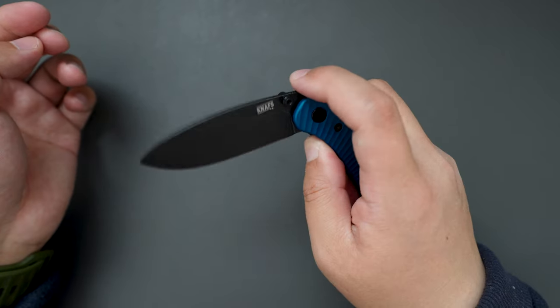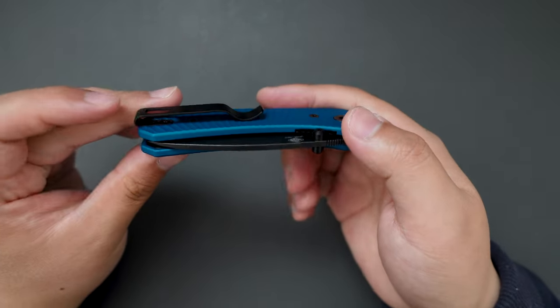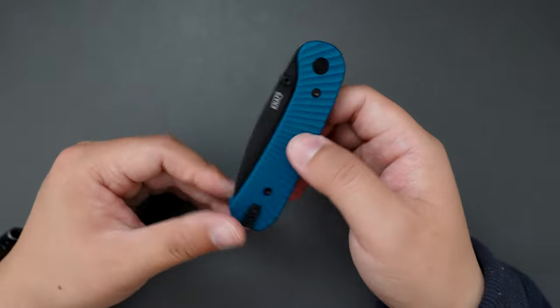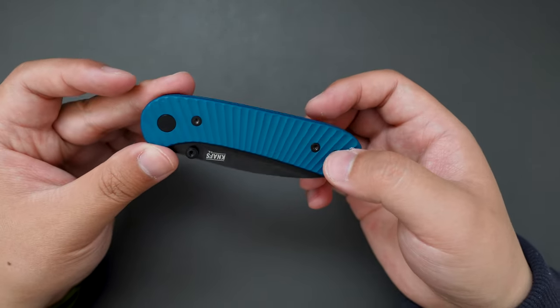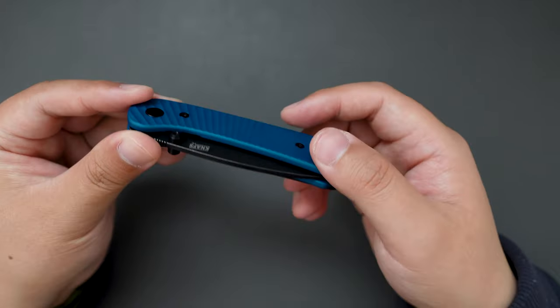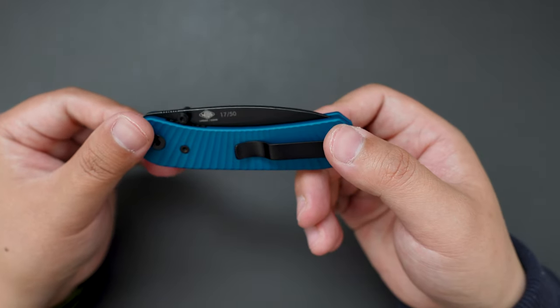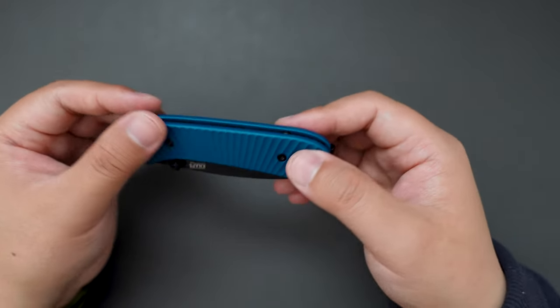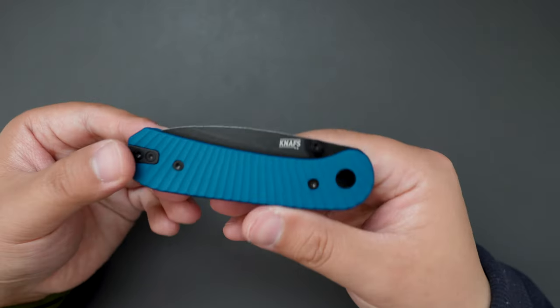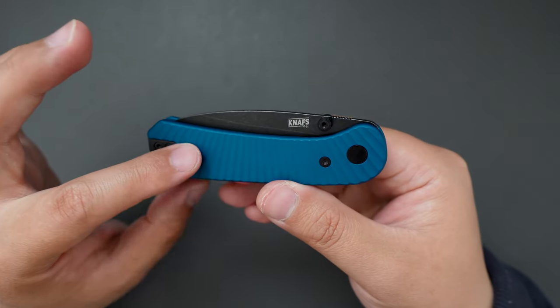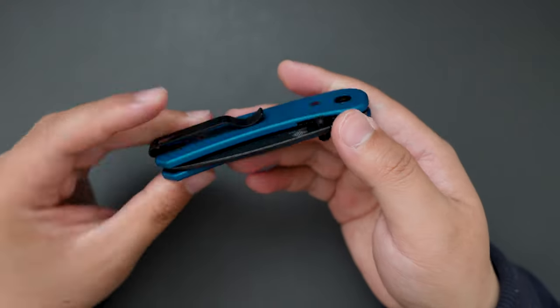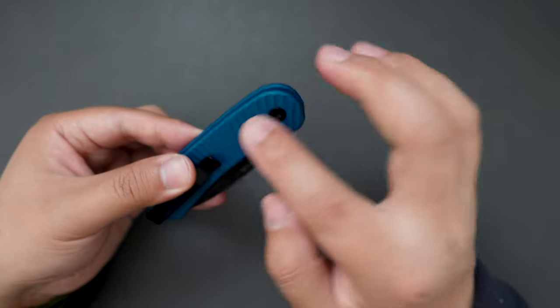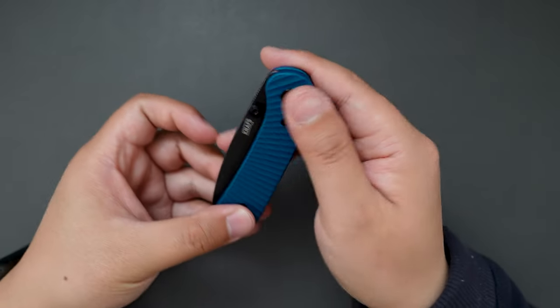I think the base model of this knife, Blender 1, is in D2 steel, which is only like $45 now. And G10 handle. But I'm just not a big fan of the D2 steel. So I opted for this kind of upgraded version that has S35VN steel.